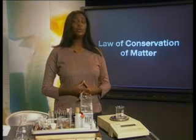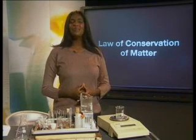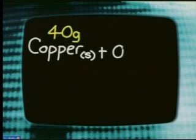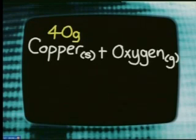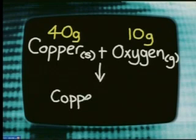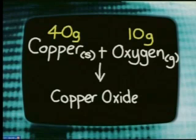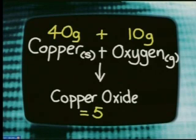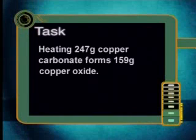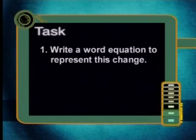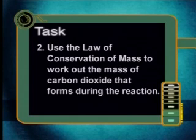When you learn about how to do chemical calculations, you will find out just how useful the law of conservation of mass is. Imagine you react 40 grams of copper with 10 grams of oxygen — what mass of product would you expect to find? We start by writing a word equation: copper plus oxygen gives copper oxide. Copper and oxygen are the reactants, and copper oxide is the product. The law of conservation of mass tells us that the mass of the copper plus the mass of the oxygen equals the mass of the copper oxide — so the mass of the product is 50 grams. Your task: heating 247 grams of copper carbonate forms 159 grams of copper oxide. Write a word equation to represent this change, and use the law of conservation of mass to work out the mass of carbon dioxide that forms during the reaction.